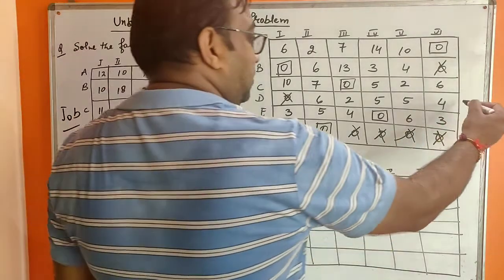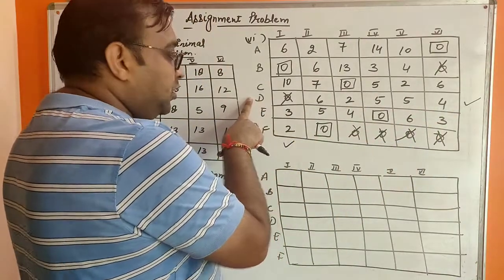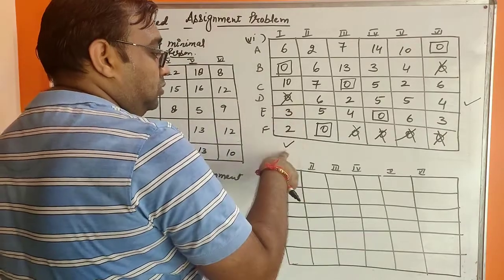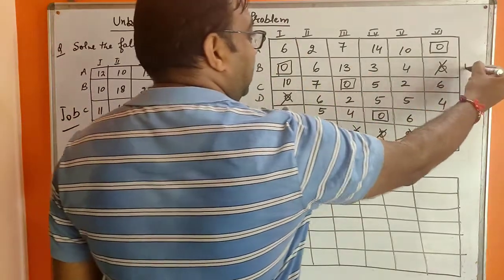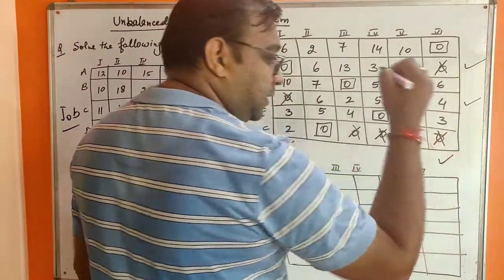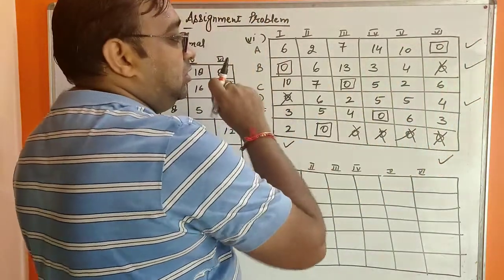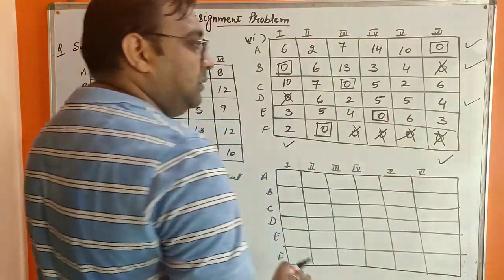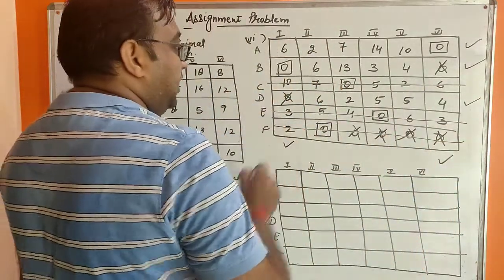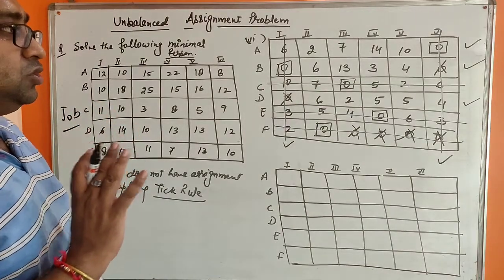Apply the tick rule: select the row without assignment (fourth row), then select the column with a cross zero in that row, then select the row with assignment in that ticked column, then identify the column with a cross zero in that row, and continue selecting rows and columns. When no more cross zeros exist, the method is complete. Draw lines through unticked rows and ticked columns so all zeros are covered.